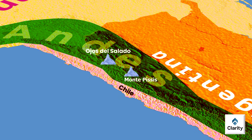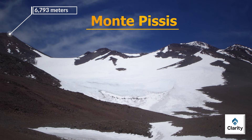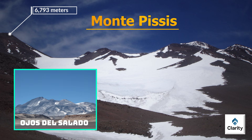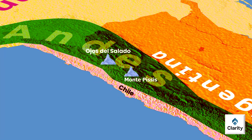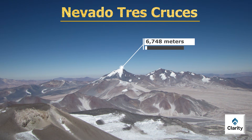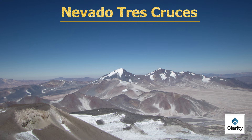Next comes Monte Pissis, located in Argentina near the border with Chile, standing at 6,793 meters above sea level. Like Ojos del Salado, it is also volcanic but currently inactive. Then we have Nevado Tres Cruces, situated entirely within Chile at a height of about 6,748 meters. This mountain is volcanic, its slopes have glaciers, and despite being volcanic it shows no current activity.